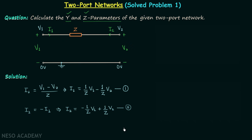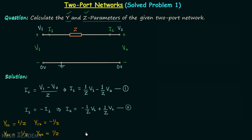Now when you compare equation 1 and equation 2 with the standard Y parameter equations, you will find parameter y11 is equal to 1/z, parameter y12 is equal to negative of 1/z, parameter y21 is also equal to negative of 1/z, and the fourth parameter y22 is equal to 1/z. So these are the four Y parameters.